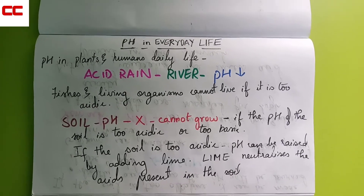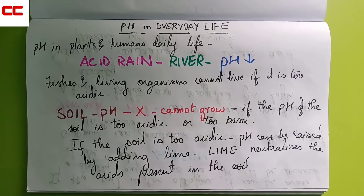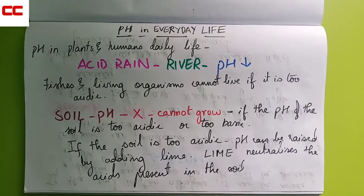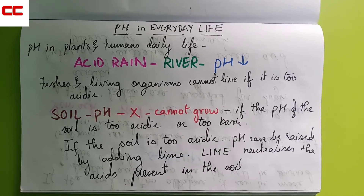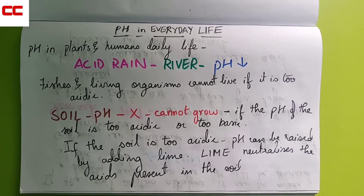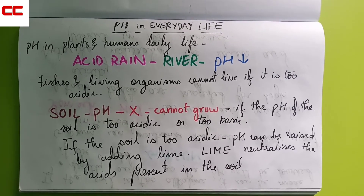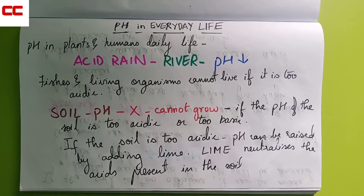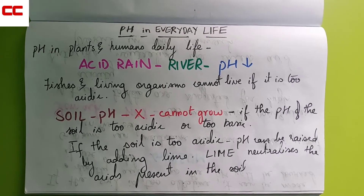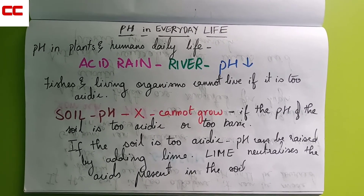Whenever there is acid rain that occurs in the river, the pH decreases in the river because the rain is acidic itself. Lesser the pH value, more the acidic nature. Because of this decrease in pH, the fishes and living organisms cannot live if it is too acidic — that is the reason living organisms die in rivers.